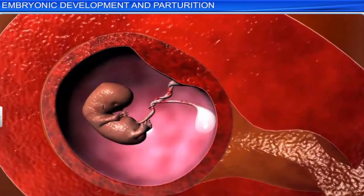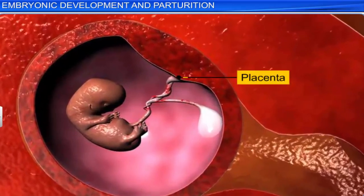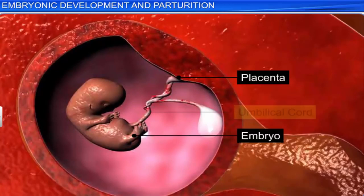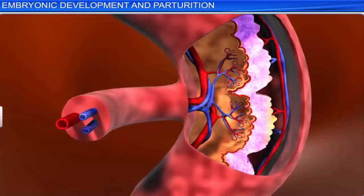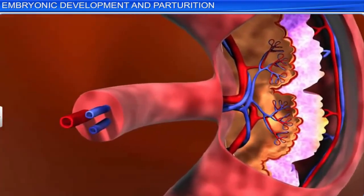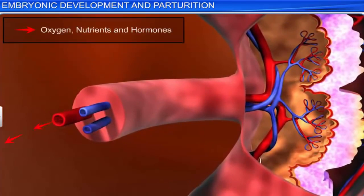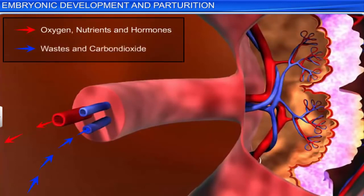Initially, this embryo is attached to the placenta, but as it starts to develop, it moves away from the placenta and remains connected to it via an umbilical cord. The placenta is an important structure that supplies the embryo with oxygen, nutrients, and hormones, as well as carries waste products from the embryo back to the mother.